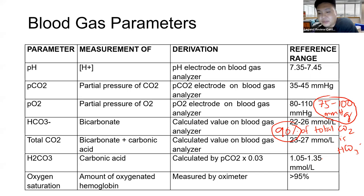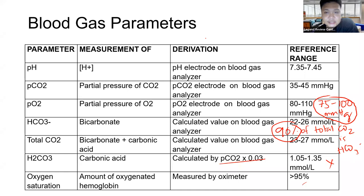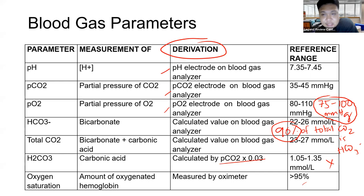Carbonic acid is 1.05 to 1.35 mmol/L. You can actually compute for carbonic acid using PCO2 — multiply PCO2 by 0.03. For pH, PCO2, and PO2 — the first three parameters — these are directly measured using electrodes. For pH and PCO2, the principle is potentiometry. So if the board asks for the principle of the pH electrode or PCO2 electrode, the answer is potentiometry — that's two points right there.